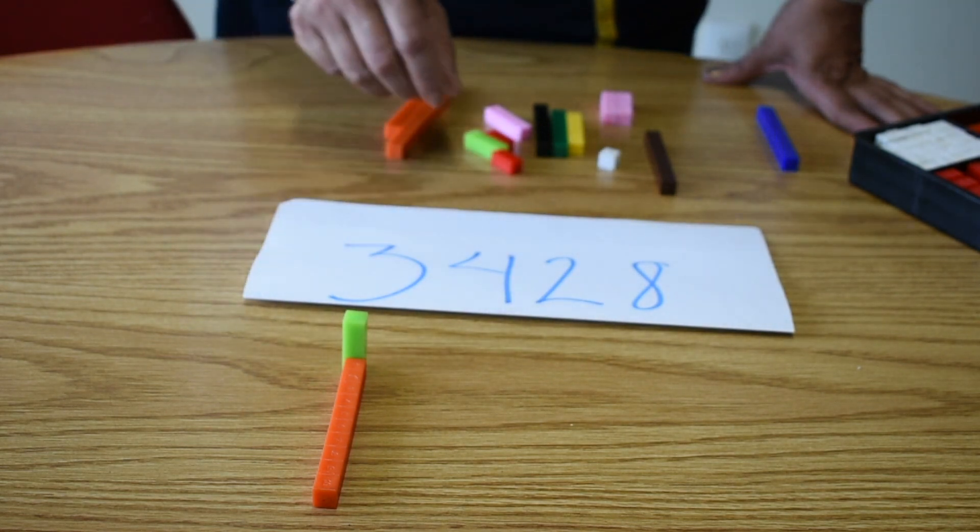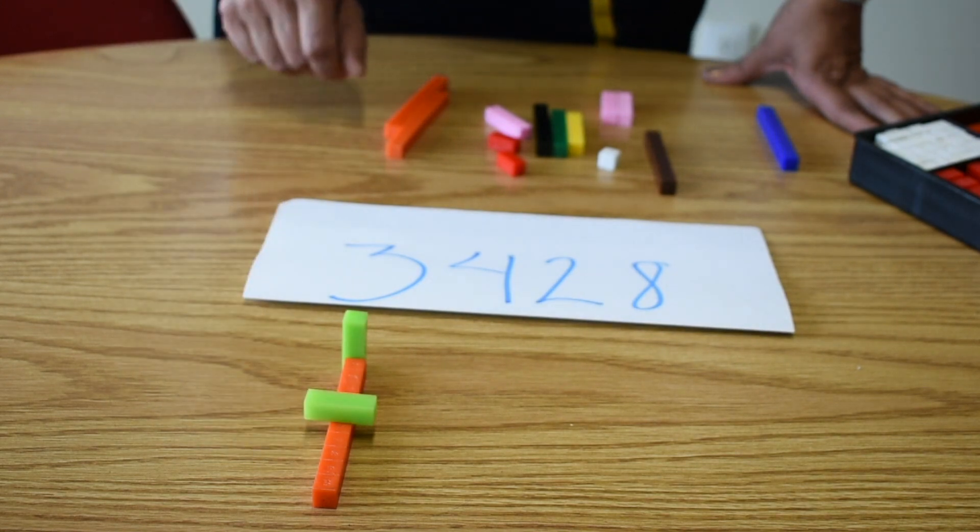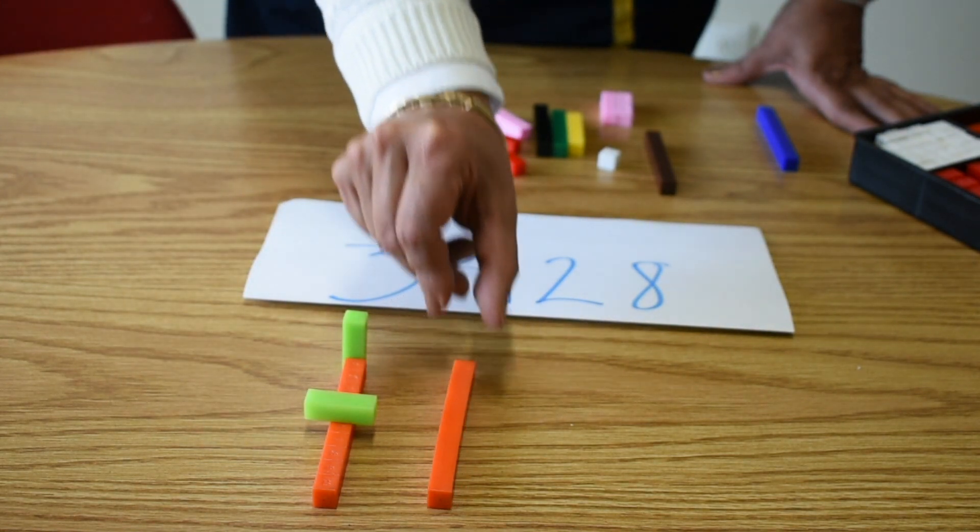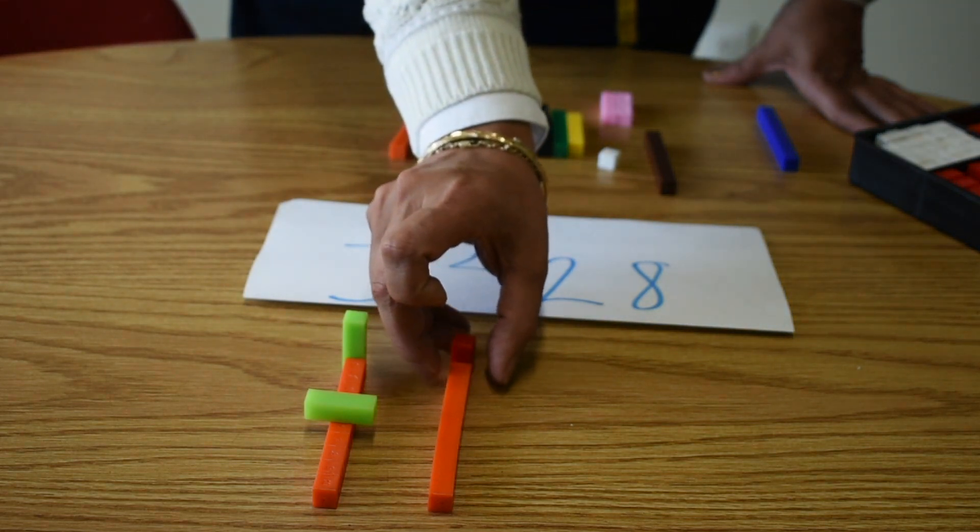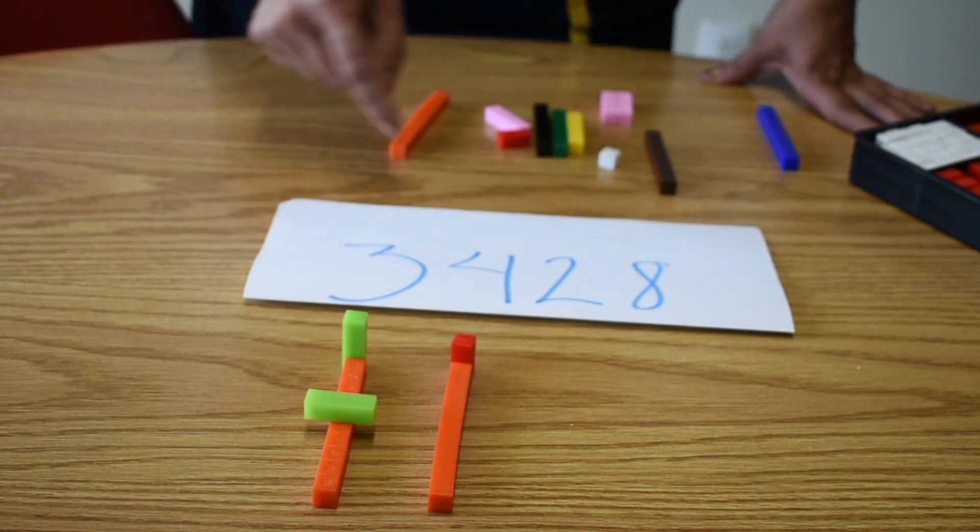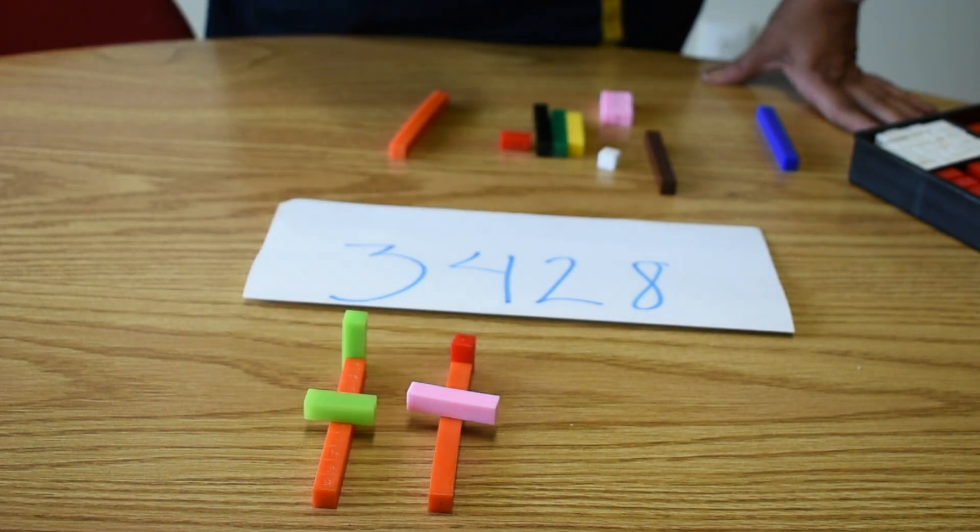This is 1,000. And 3,000, we have to cross another green one. 4,000, we have to cross number 4.